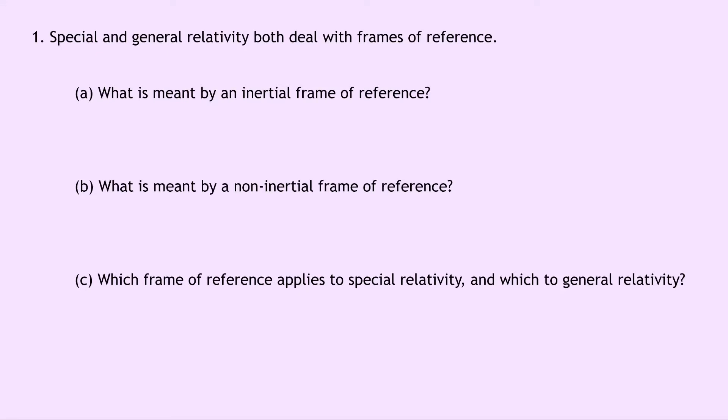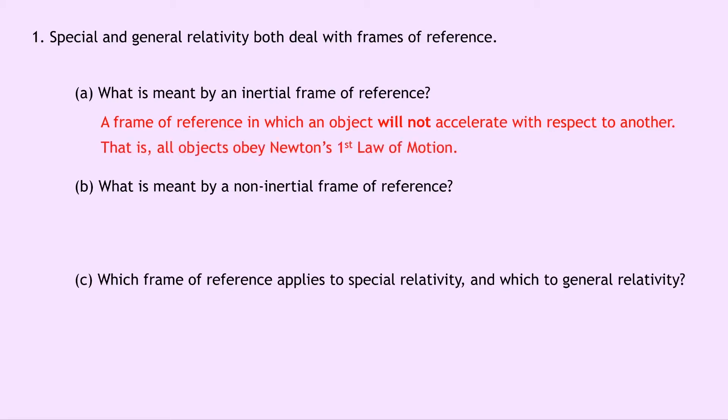Question 1 says that special and general relativity both deal with frames of reference. Part A says what is meant by an inertial frame of reference. Well an inertial frame of reference is a frame of reference in which an object will not accelerate with respect to another. That is, all objects obey Newton's first law of motion if they are in inertial frames of reference.